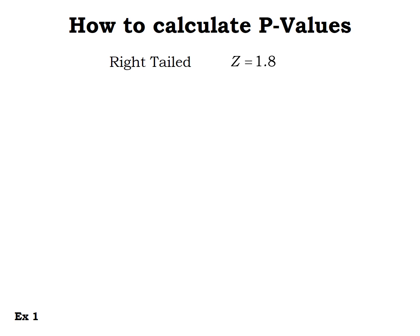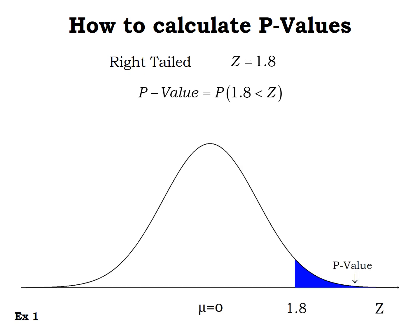Using the same z-score of 1.8 for a right-tailed test, the p-value is the probability of getting a value bigger than 1.8. We need to find the area to the right of 1.8. Using normal CDF from 1.8 to infinity, with mean zero and standard deviation one, we get a p-value of 0.0359. Right-tailed test: p-value is the area to the right of your test statistic.